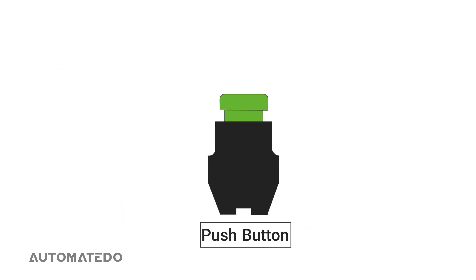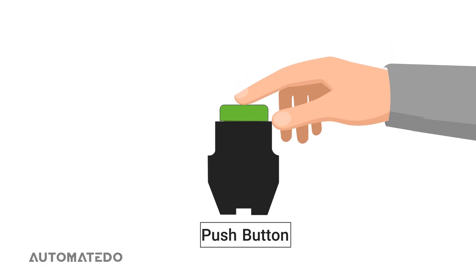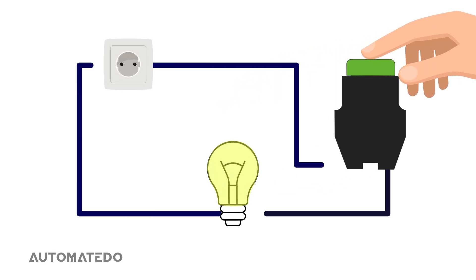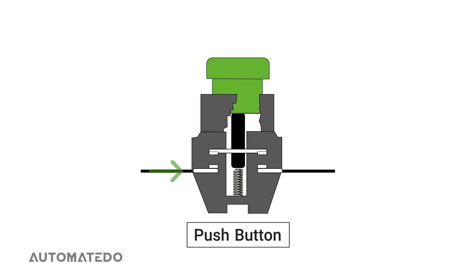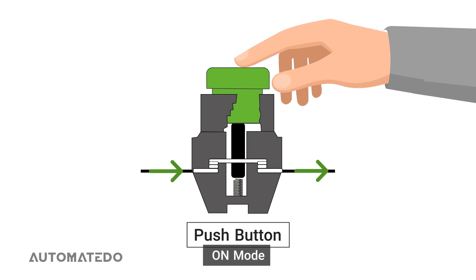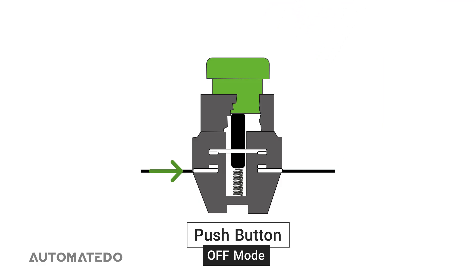Push buttons are momentary action switches operated by hand. They change an electrical circuit from open to closed or from closed to open when the switch is pressed or released. These buttons switch between two positions — on and off. In the on state, a metal spring inside completes the circuit by linking the terminals, enabling electricity to pass through. In the off state, the connection is broken as the spring pulls away, cutting off the current.